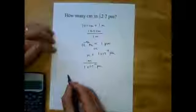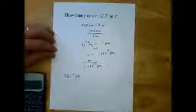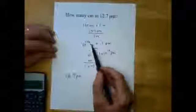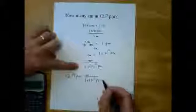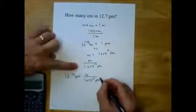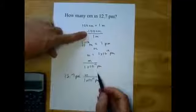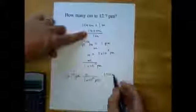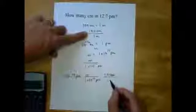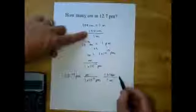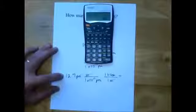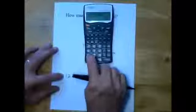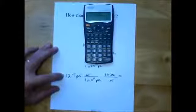We work out the problem: 12.7 picometers, a very small number, times the conversion factor meters per one times ten to the twelfth picometers. Picometers cancel, leaving us with meters. Then we multiply by 100 centimeters per one meter — meters cancel and we're left with centimeters. We plug into the calculator: 12.7 times 100 divided by 1 EXP 12.